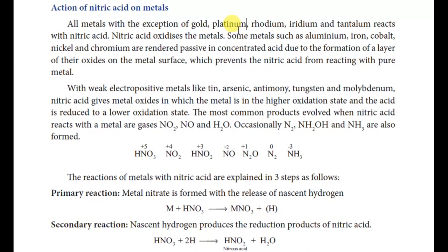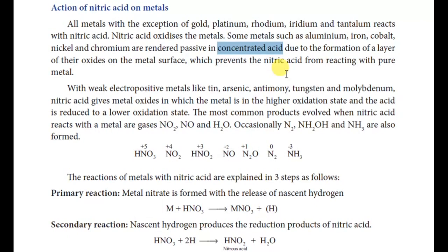Some metals also react with nitric acid, but we have to talk about aluminum, iron, cobalt, nickel, and chromium. Concentrated nitric acid forms a key protective oxide layer on the metal surface, which prevents the nitric acid from reacting with the pure metal. That is why aluminum, iron, cobalt, nickel, and chromium do not react with concentrated nitric acid.